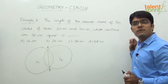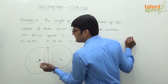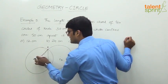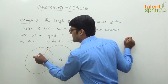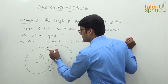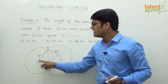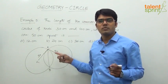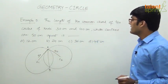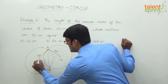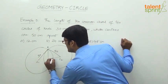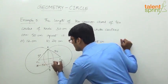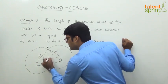The radius from C1 to point A is 30, and from C2 to point A is 40 — since from any center to a point on its circumference is the radius. The distance between C1 and C2 is 50 centimeters. So C1 to C2, the total distance, is 50.